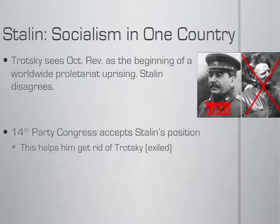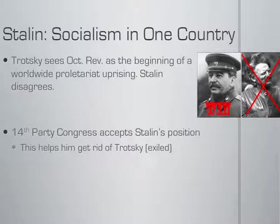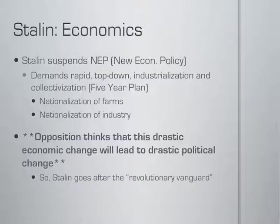What does Stalin want? First, he has to eliminate the other Bolshevik leaders who are vying for power when Lenin passes away. He distances himself from Trotsky on a single issue: whether there should be socialism in one country — just in Russia — or if this is a worldwide movement. Stalin is much more nationalistic than Trotsky and says this is going to happen here and we don't care what's going on elsewhere, whereas Trotsky thinks the Russian revolution will spread across the world. Stalin wins this fight at the next party congress, paints Trotsky as a traitor who doesn't really care about Russia, and eventually gets Trotsky exiled — Trotsky ends up in Mexico, actually.